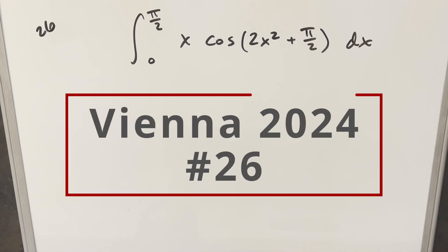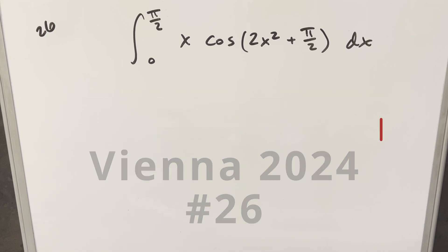Okay, we return to another integral. This one's from the Vienna Integration B 2024, problem 26. We have the integral from 0 to pi over 2 of x times cosine of 2x squared plus pi over 2 dx.